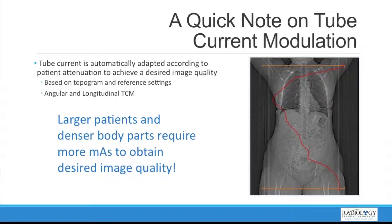The main point of tube current modulation is that larger patients and denser body parts are going to require more mAs to obtain the same desired image quality. So if we have more attenuation in the beam — more attenuation seen on the topogram — then the mAs will have to go up.